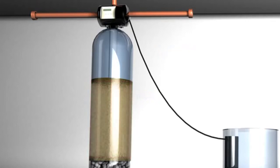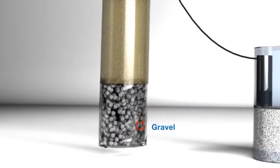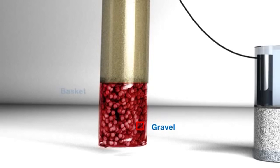Next, we have a layer of gravel. The gravel protects the lower basket of the dip tube. This basket keeps the resin from entering the dip tube and passing into the home. The gravel also allows water to flow through with ease.